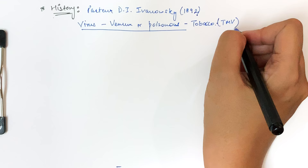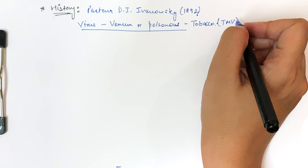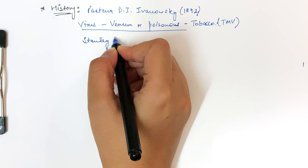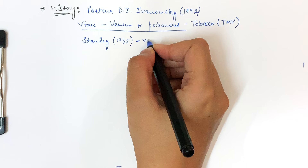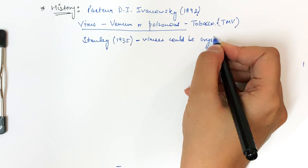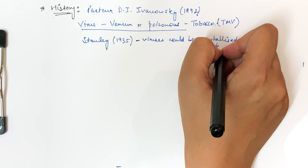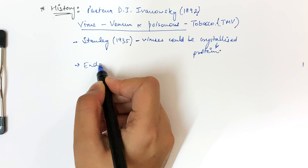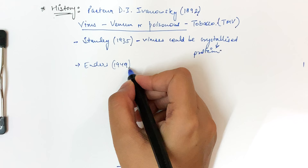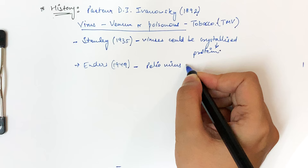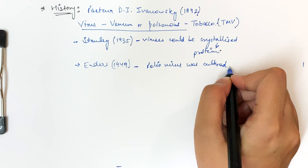Another important name is Stanley, who in 1935 discovered that viruses could be crystallized, and that these crystals are basically proteins. Then there is Enders, who in 1949 cultured the poliovirus. These scientists discovered various kinds of viruses.